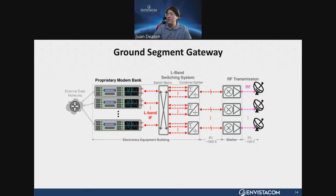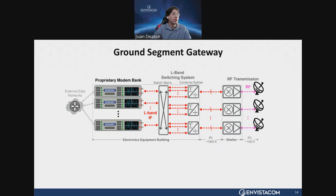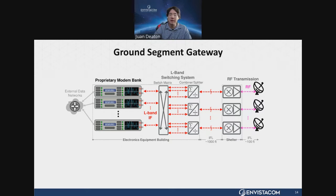As the L-band path length increases, there is additional distortion and signal loss. Some of that can be compensated through specialized techniques, but there's still a limitation of about a thousand feet. Additionally, these L-band switching systems tend to be monolithic — once I run out of capacity, it can be very difficult to add additional capacity without ripping out the entire switch and going to a larger one.